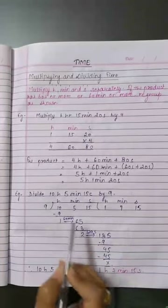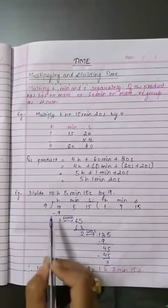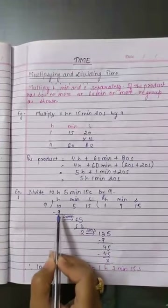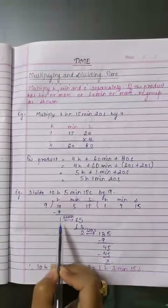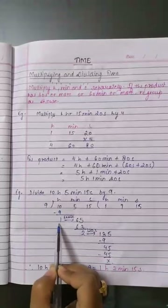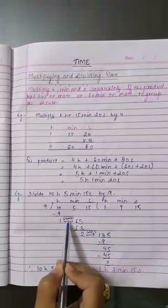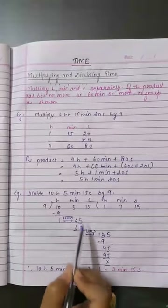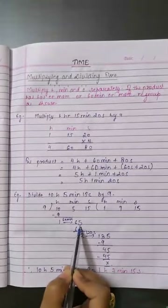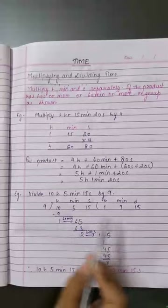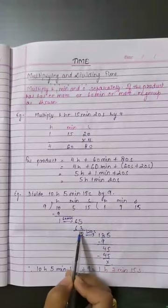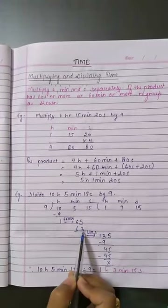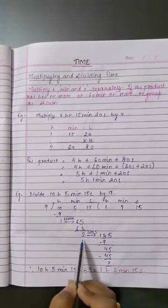We take the hour part first. 9 ones are 9; 10 minus 9 is 1. 1 hour is 60 minutes, so 60 plus 5 becomes 65 minutes. 9 sevens are 63; 65 minus 63 is 2 minutes.